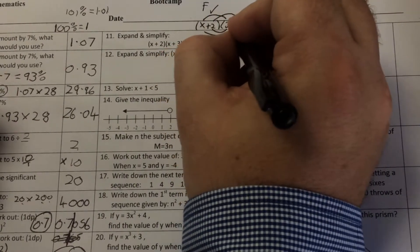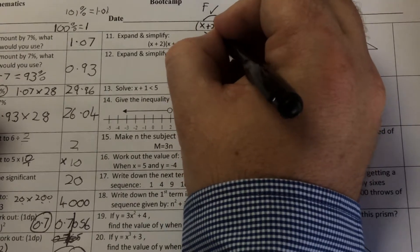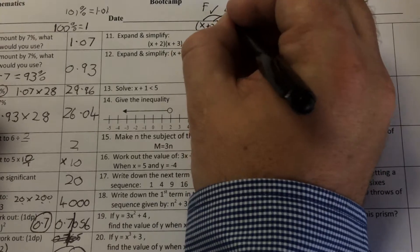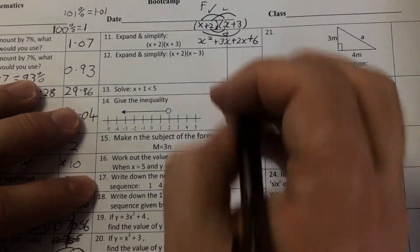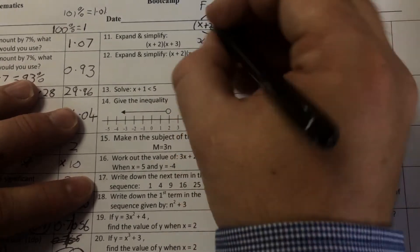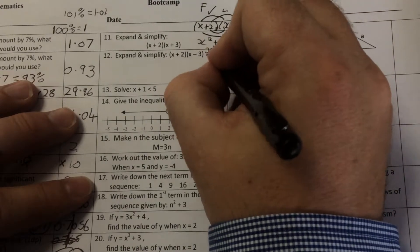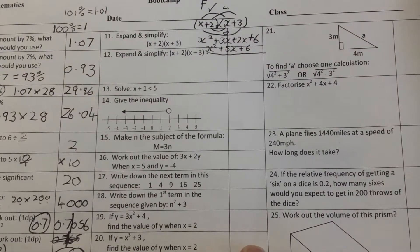Then I'd do the outside one, x times 3 is 3x. Then the inside, 2 times x is 2x. And the last one, 2 times 3 is 6. And I can collect them two terms in the middle together. So I've got x squared plus 5x plus 6. So the answer to that one is x squared plus 5x plus 6.